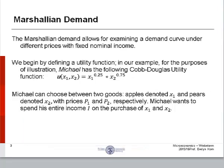Michael can choose between two goods, apples denoted x1 and pears denoted x2, with prices p1 and p2 respectively. Michael wants to spend his entire income, i, on the purchase of goods 1 and 2. x simply means the unit amount of good 1, so x represents an amount.